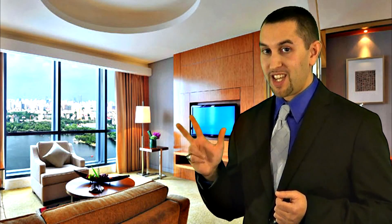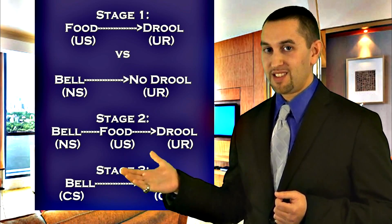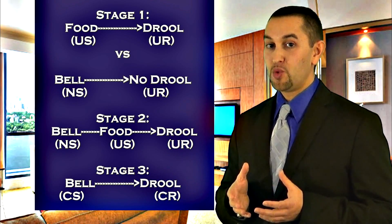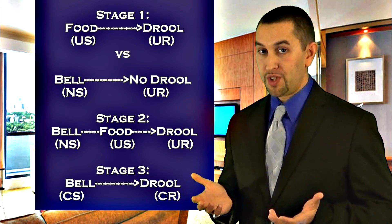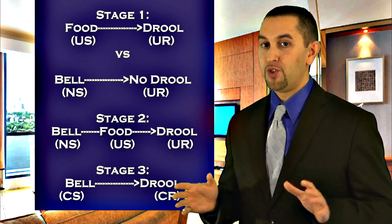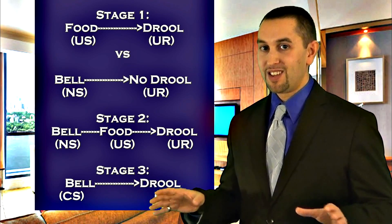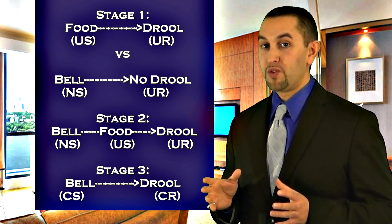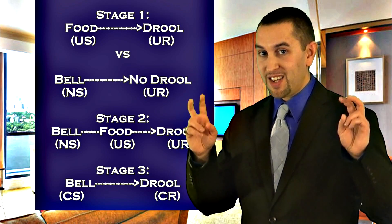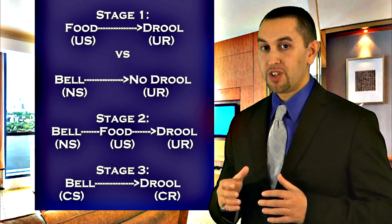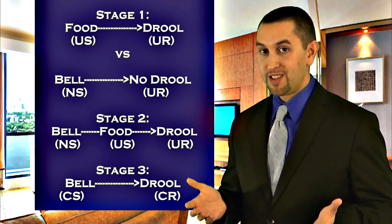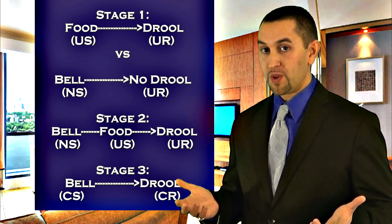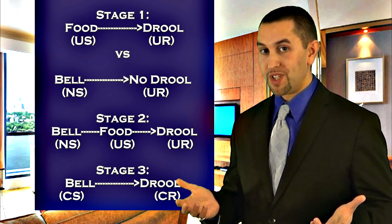Conditioning actually has three stages, as you see here. In stage one, the dogs drool in response to food, but they have no reaction to the bell. Food is called an unconditioned stimulus, because no special condition is required — the dogs naturally drool in response to food.